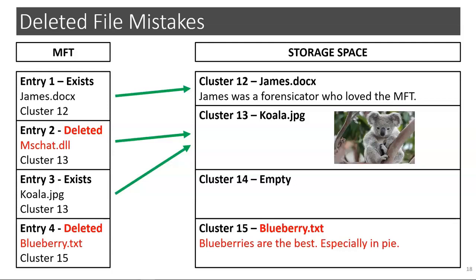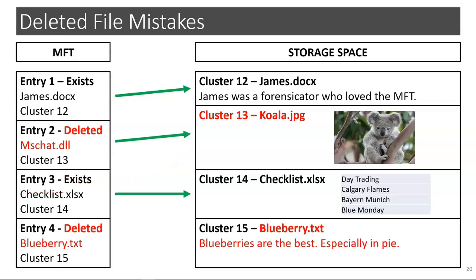Let's take this one step further. What if MFT entry number 3 and its corresponding file, the actual koala.jpg, had actually gotten there as a result of a web cache entry? Then, after the requisite passage of time, the system deleted the koala.jpg file, and nothing had overwritten it. However, MFT entry number 3 had later been reassigned to a new file called checklist.xlsx. Now the koala picture still exists on cluster 13, but the only reference to cluster 13 exists in MFT entry number 2. You're left with an MFT entry and a cluster in the hard drive storage space that seem to somehow belong to each other but have absolutely nothing to do with each other.